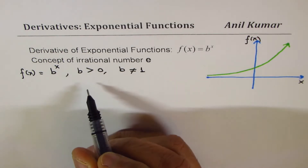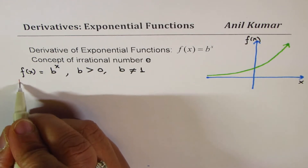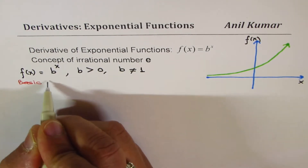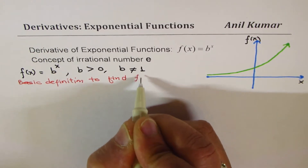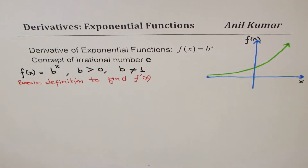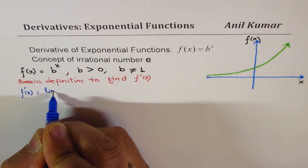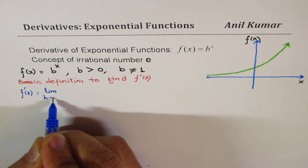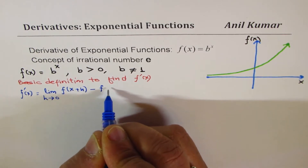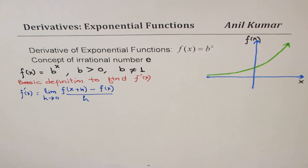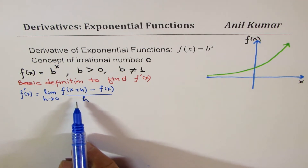Using our basic definition of derivatives we can find the derivative of this function. So f dash x equals the limit of the difference quotient: limit h approaches 0 of f of x plus h minus f of x over h. That is the definition of finding the tangent at any point, or the derivative of a function at any point x.